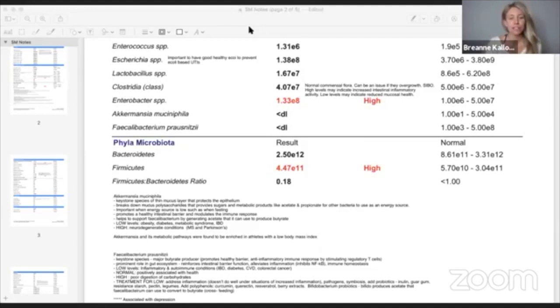I'm a naturopathic doctor and today we're going to talk all about how gut health impacts resistant weight loss. I'm the creator of the metabolic reset program where we help individuals lose 20 to 40 pounds in just six weeks.